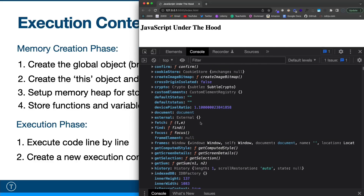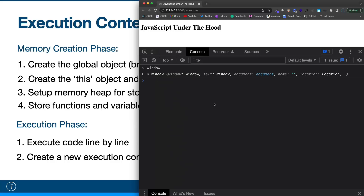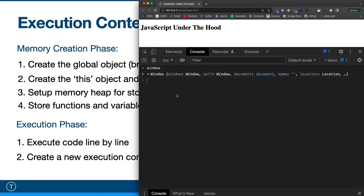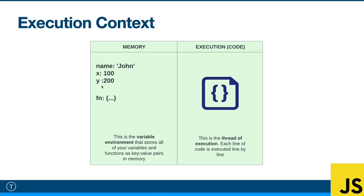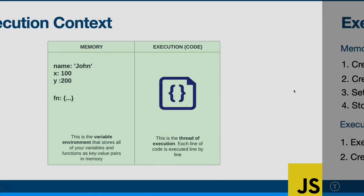The global object is generated when the execution context is created. The second thing it does is create the 'this' object and bind it to the window object — that's why in the global scope, typing 'this' gives you the same global window object. It then sets up a memory heap for storing variables and function references. When it stores these, it stores the entire function, but for variables it stores them and sets them to undefined. So during the creation phase, functions are fully stored, but single variables are stored as undefined first — and that's important to understand when it comes to hoisting.